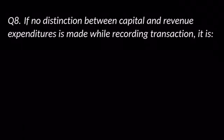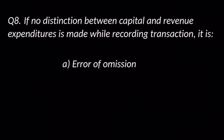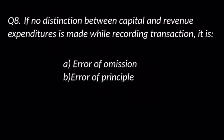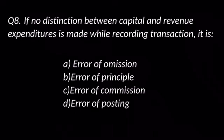Question number eight: If no distinction between capital and revenue expenditures is made while recording a transaction, it is — options are: A. Error of omission, B. Error of principle, C. Error of commission, and D. Error of posting. The answer is B: Error of principle.